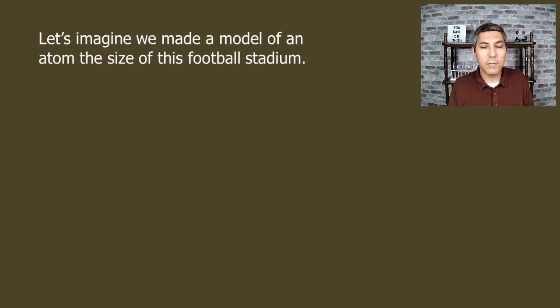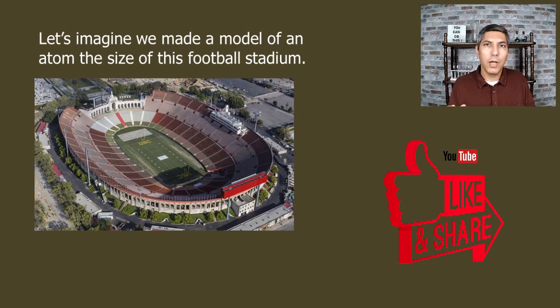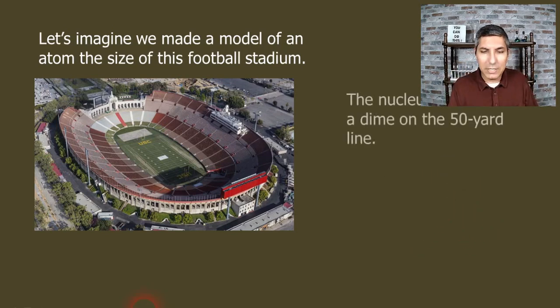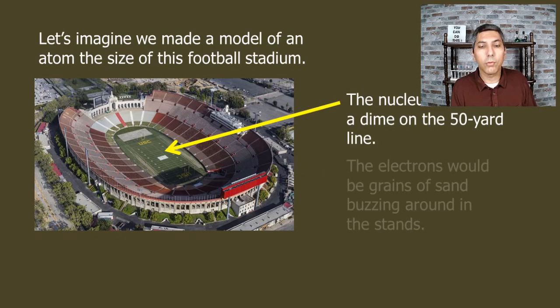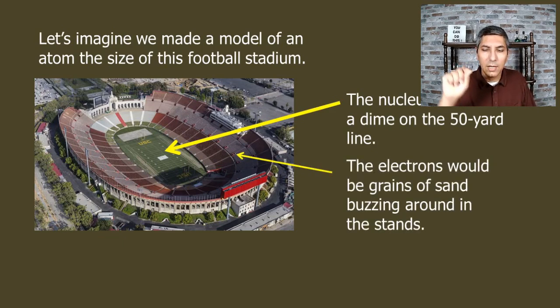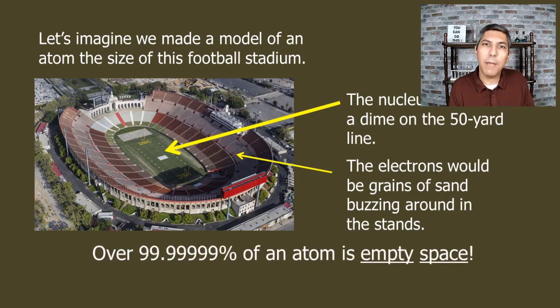If we were to draw one to scale, it might be helpful to use a model that's about the size of a football stadium. So here we have a stadium, and if we scaled our atom up to the size of that football stadium, then we'd say that the nucleus would be a dime or a very small coin on the 50 yard line right there in the middle. And the electrons would be little tiny grains of sand buzzing around in the stands of that stadium. So think about that. That's a lot of space for a very small amount or volume of protons and neutrons.